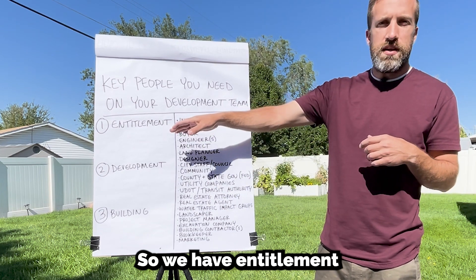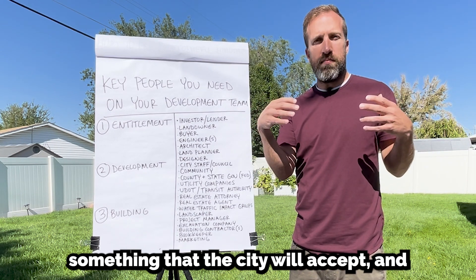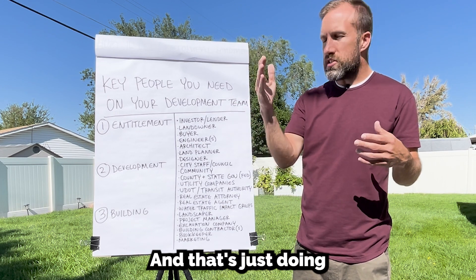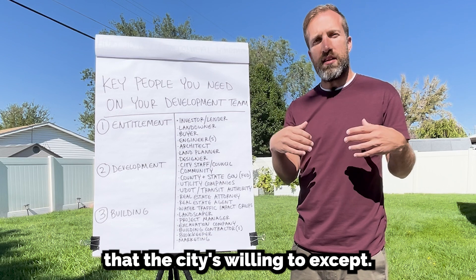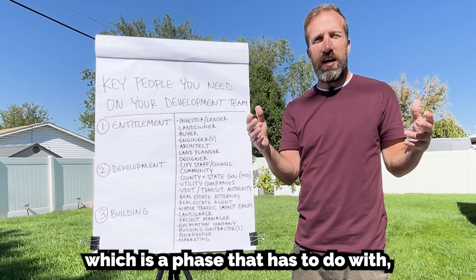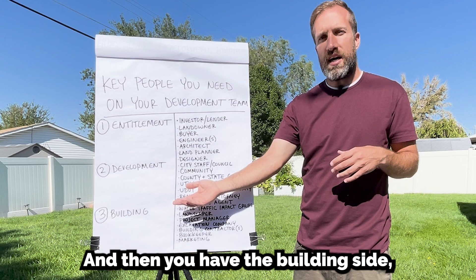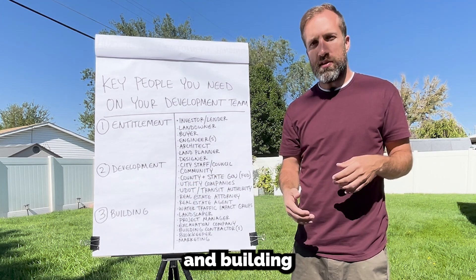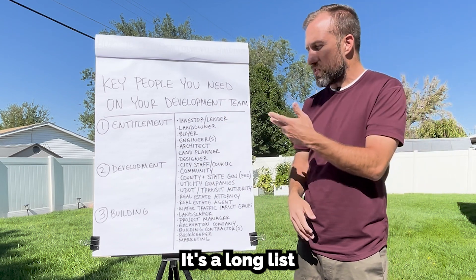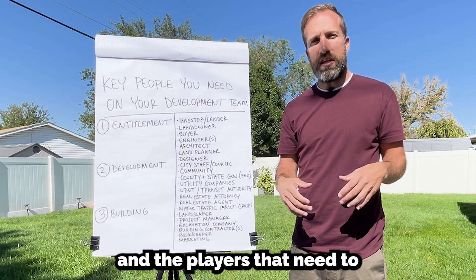We have entitlement, which is working to engineer something that the city will accept. You process that through the city in a process we call entitlements — just doing the paperwork necessary to have something the city is willing to accept. Then you have the development period, which deals with utilities, roads, and dirt work. Then you have the building side, which we call vertical — actually building the buildings. Here are some of the players; it's a long list that pretty much sums up a majority of development.